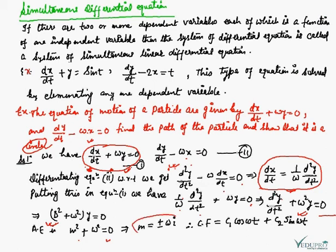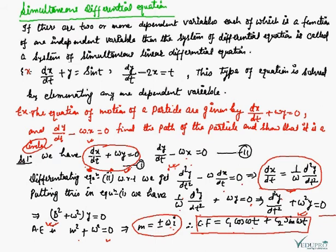And m = ±ωi. So the auxiliary equation has two roots: m = ωi and m = -ωi. Therefore, the complementary function is C₁cos(ωt) + C₂sin(ωt). Now we have to calculate it further.